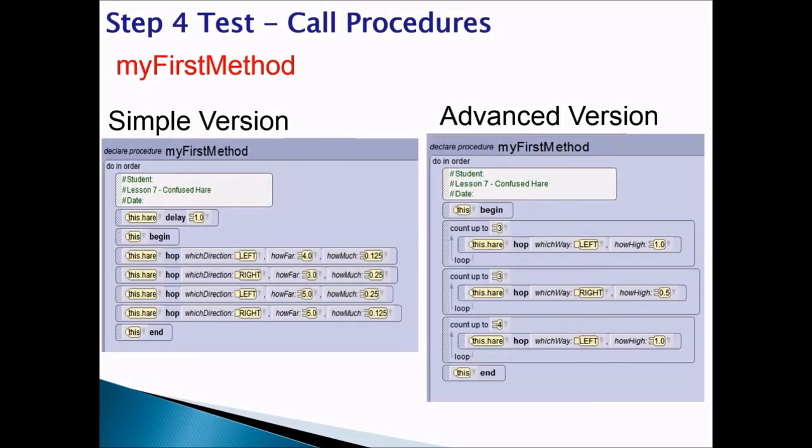Step four, test. Call procedures. You would call procedures in myFirstMethod. And if you did a simple version of this animation, your programs should look something like this. MyFirstMethod should look something like this. You would have the beginning, that's the beginning of the story, and then you would have a series of hop statements, and then you would have end.